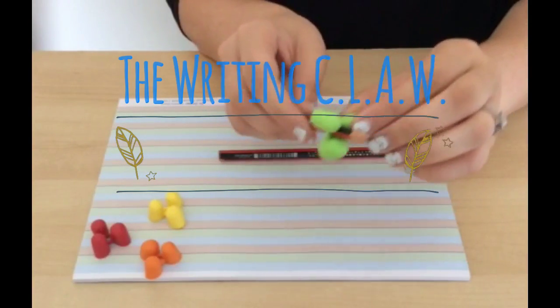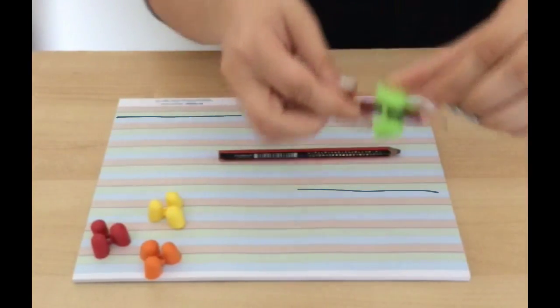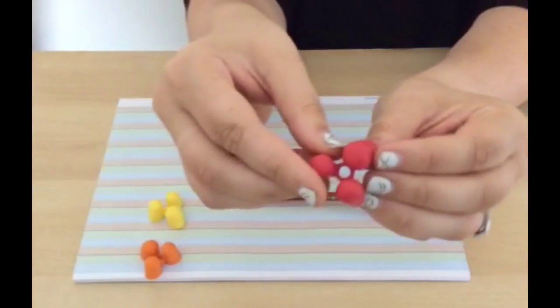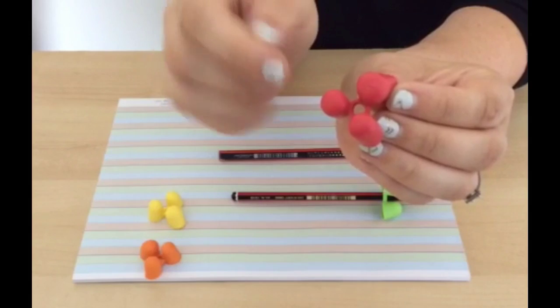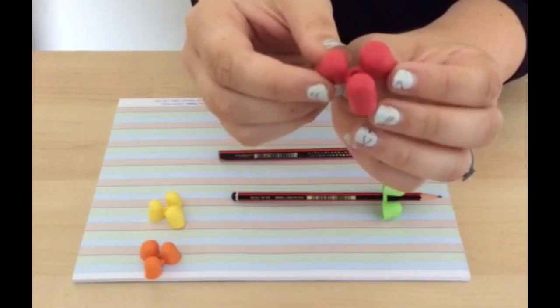The writing claw fits really easily on any size pencils. Underneath there are letters saying T and I. T is for thumb, I is for index finger, and helps you to know where to place your fingers.